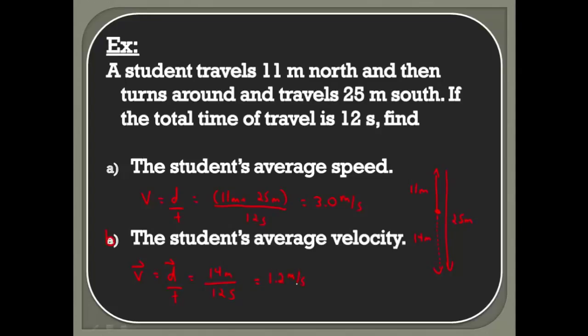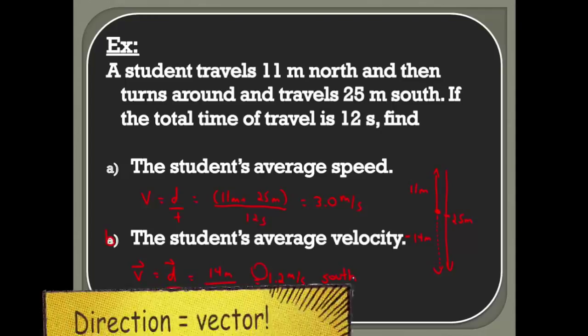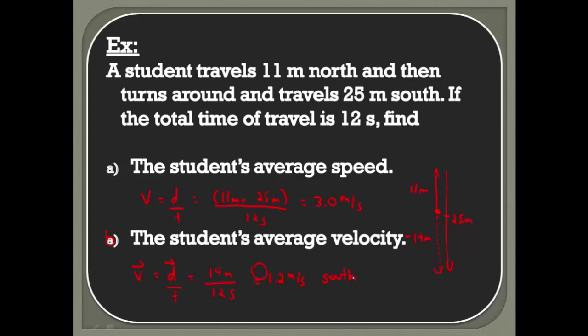So displacement is 14 meters divided by 12 seconds, which gives us 1.2 meters per second. Now, if we consider up as positive and down as negative, which we do a lot in physics, instead of just positive 14, it's negative 14, giving us a negative sign out in front. What does that tell us? That's telling us our direction. So instead of writing 1.2 meters per second south, if you've established what up and down are, the sign of your solution tells you which way it's pointing.